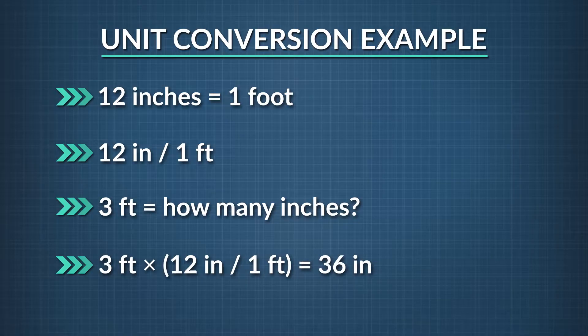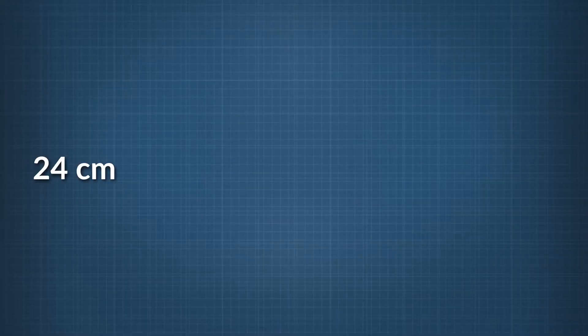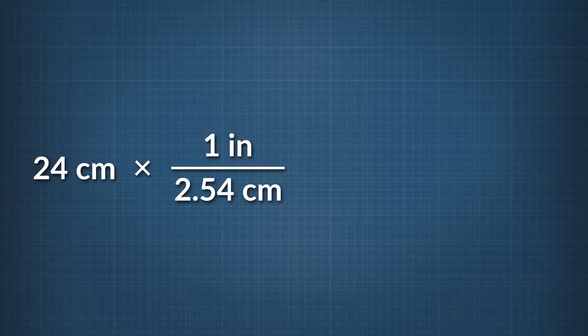But what if we want to go from metric to imperial? Let's do a problem together. Let's say we want to convert 24 centimeters into feet. First, write down the number we have, which is 24 centimeters. Next, multiply that number by a conversion factor — you may already know it, or you can look it up. Our conversion factor is 1 inch equals 2.54 centimeters. That will allow us to cancel out the units that are the same, in this case centimeters.